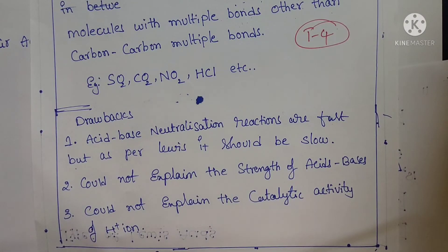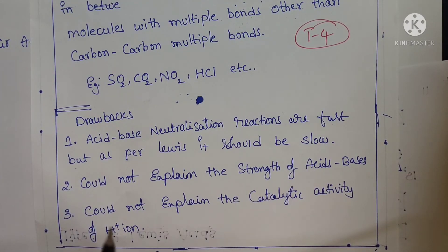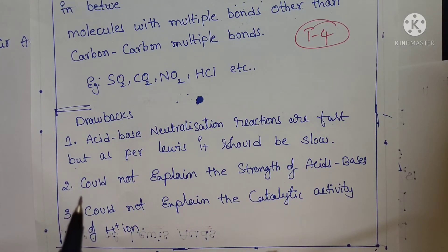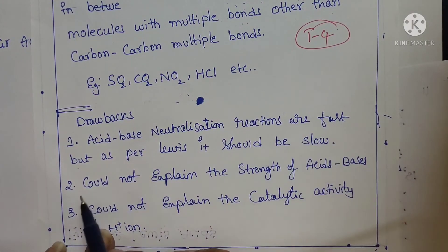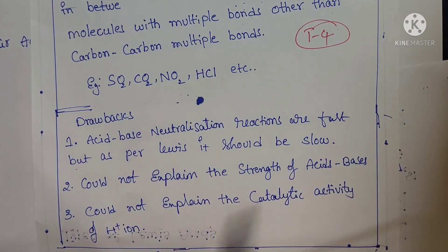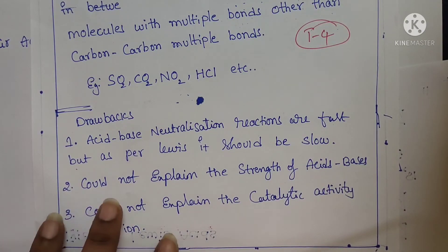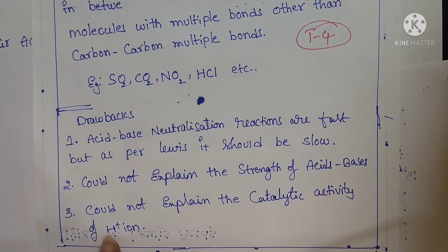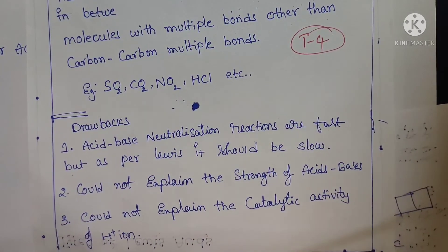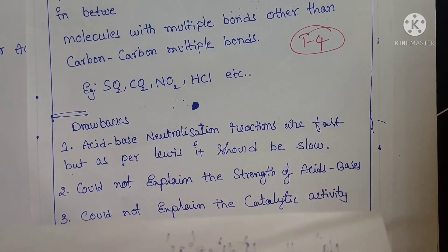Now we will see the drawbacks of Lewis acid-base theory. First drawback: neutralization reactions in general are very fast, but according to Lewis acid-base theory, neutralization should be slow — this is a drawback. Second drawback: Lewis theory cannot explain the strength of acids and bases — it cannot tell which is a strong acid and which is a strong base. Third drawback: it could not explain the catalytic activity of H+.